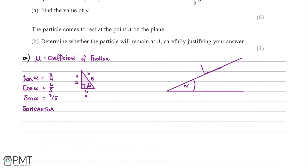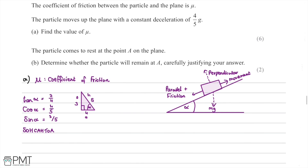I'll draw a box on the diagram to represent the particle. There is a downward force due to gravity, mg, a perpendicular force upward from the plane, and a parallel force along with friction. The particle is moving upward but decelerating at a rate of 4 over 5 g.